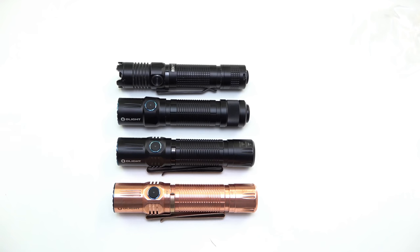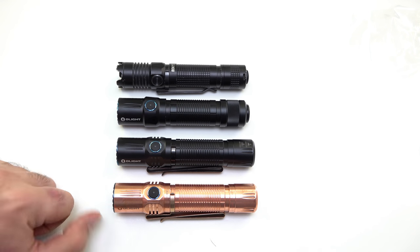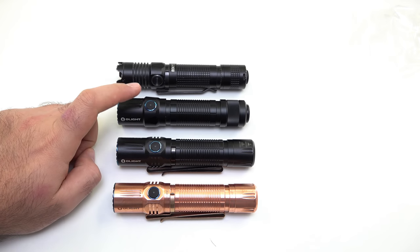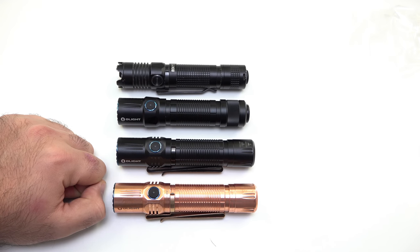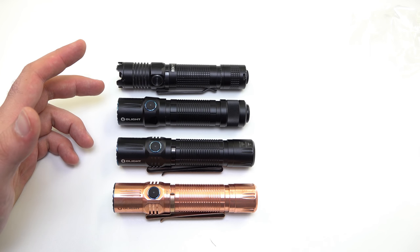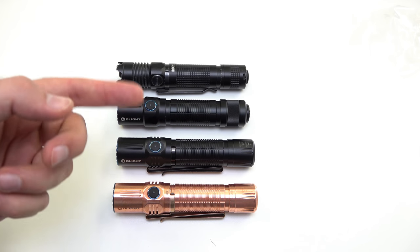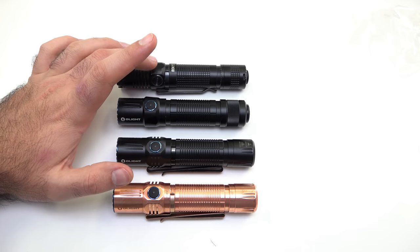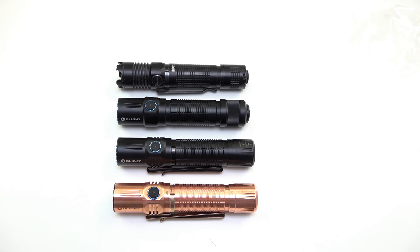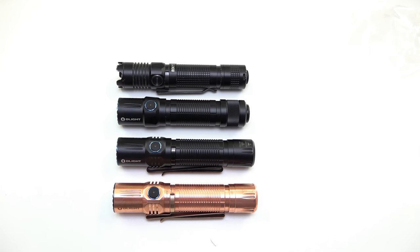Let's take a look at the copper M2R next to our other popular tactical models. Here's the standard M2R, you can see they're the exact same light but obviously this one has a lot more flash. Here's the M2T right behind it, this is the non-rechargeable standard tail switch tactical light. It's basically the M2R's little brother. And then of course we have the M1X here in the back with the crenulated bezel. This is our popular tactical tail switch family.